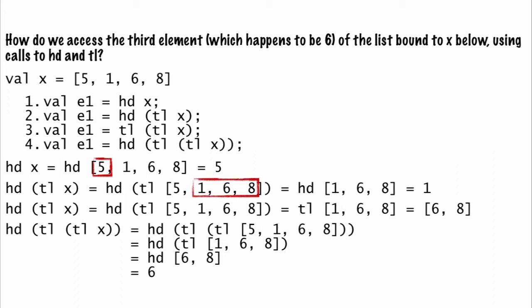The tail of x is the rest of the list, which is the list containing 1, 6, and 8. The head of that list is 1.